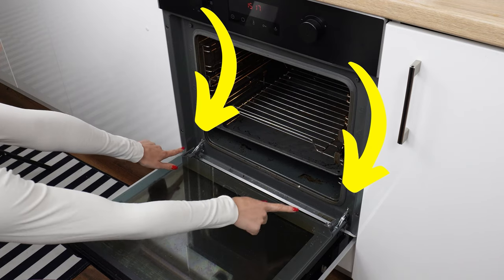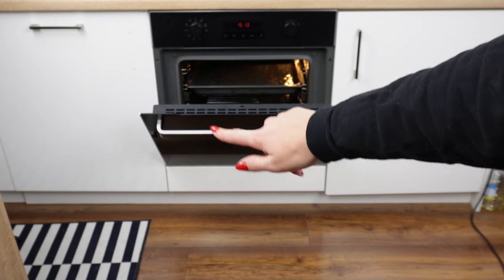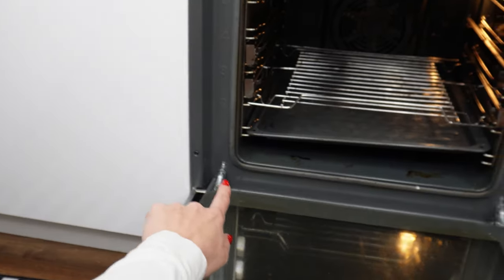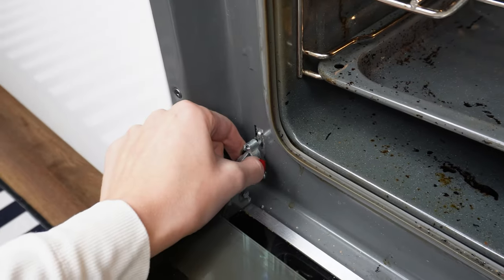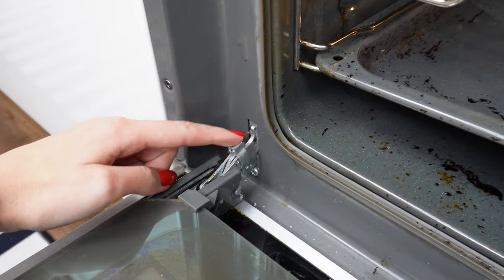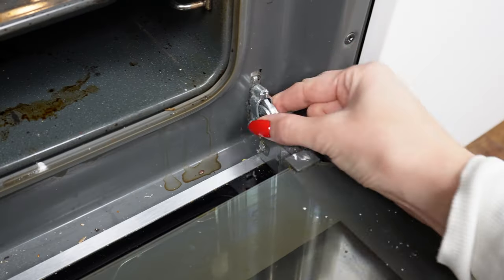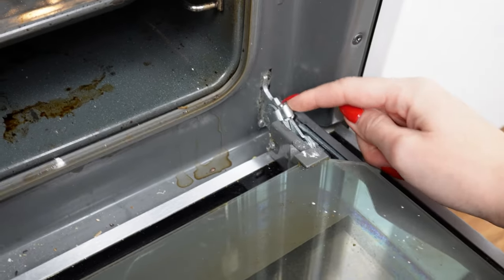Behind the oven door, there is a hidden button that makes cleaning easier. Most people are unaware of it. Just pull it upwards to release the lock. Repeat the process on the other side. With the doors prepared in this way, they will be easy to remove.